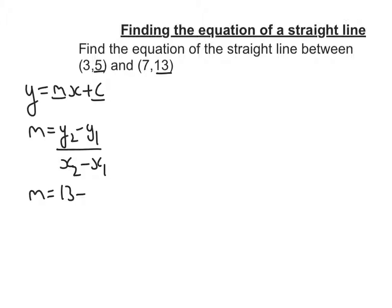minus y1, 5, divided by x2, 7, take away 3. So, 13 take away 5 is 8, 7 take away 3 is 4, so my gradient is 2.